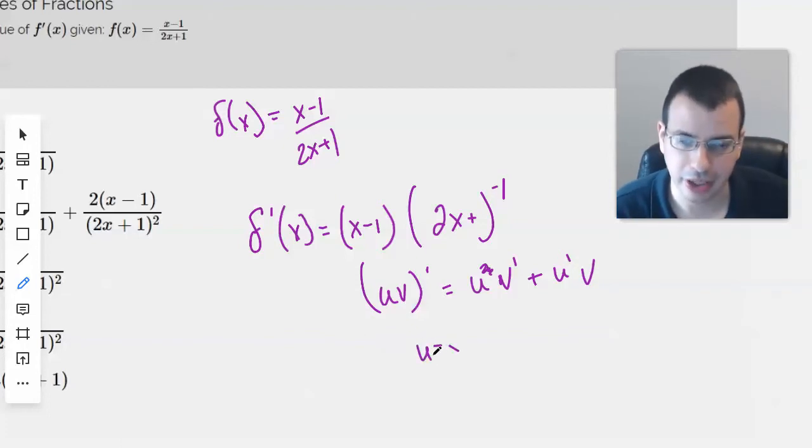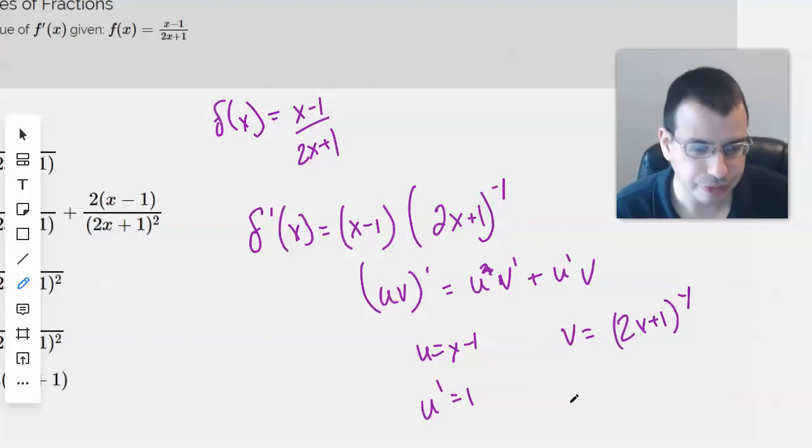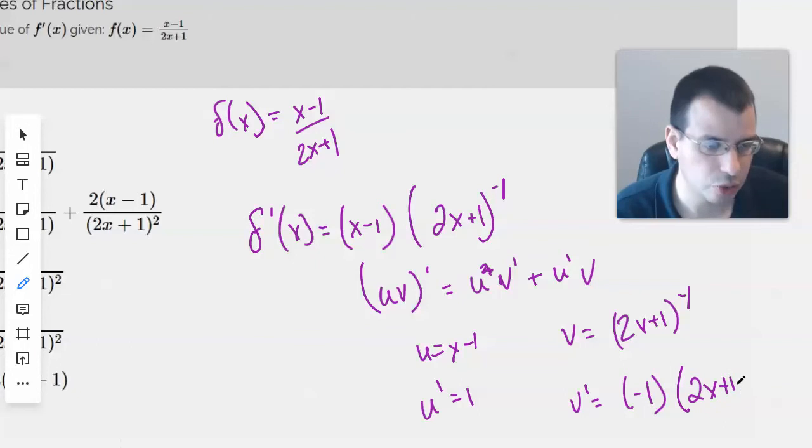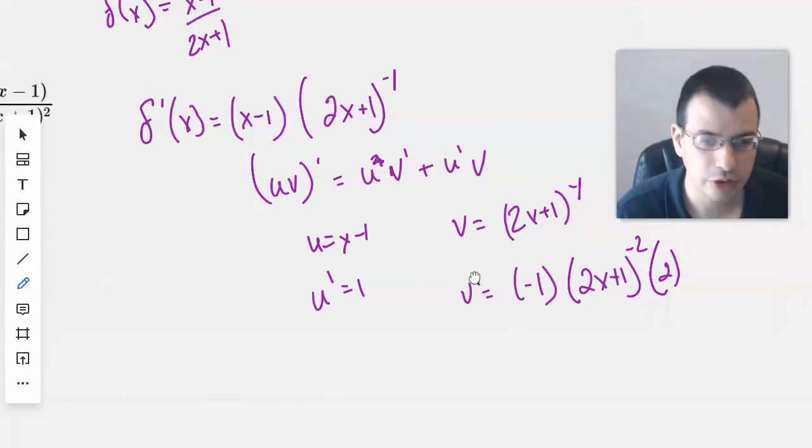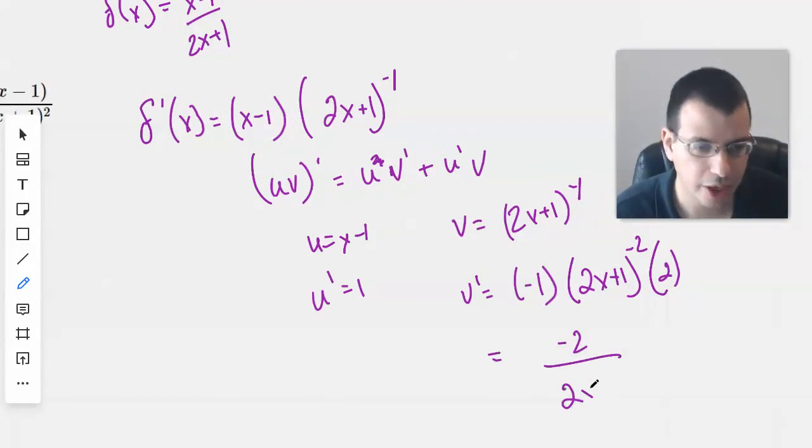So I'm going to say u equals x minus 1, u prime equals 1, v equals 2x plus 1 to the negative 1, v prime equals negative 1 times 2x plus 1 to the negative 2 times the derivative of the interior, which is 2. And this will then equal negative 2 over 2x plus 1 squared.